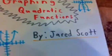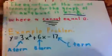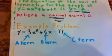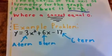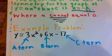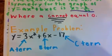Graphing Quadratic Functions by Jared Scott. The equation of the axis of symmetry for the graph of y equals ax squared plus bx plus c is x equals negative b over 2a, where a cannot equal 0.